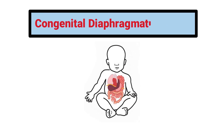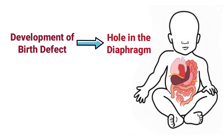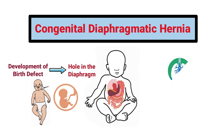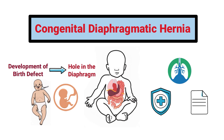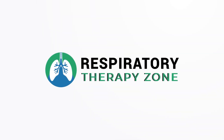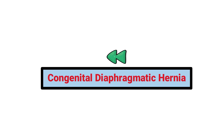A congenital diaphragmatic hernia is a developmental birth defect characterized by a hole in the diaphragm of a fetus that results in severe respiratory distress. We created this video to cover the medical definition and provide a brief overview of this topic.